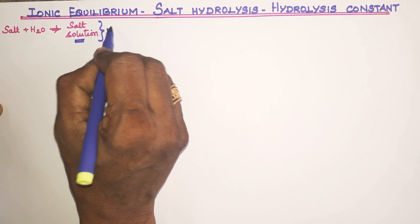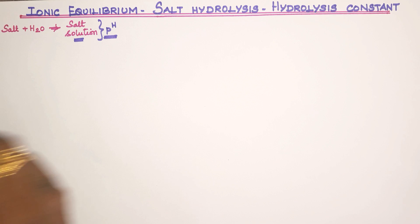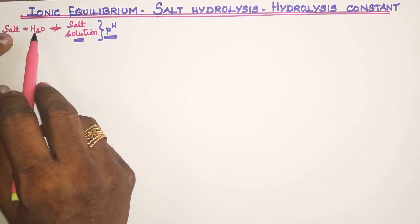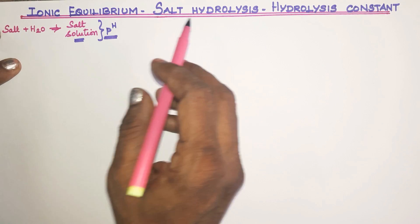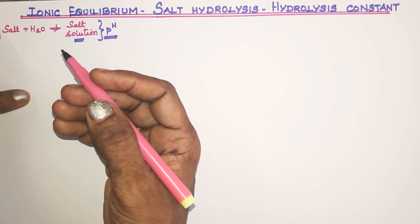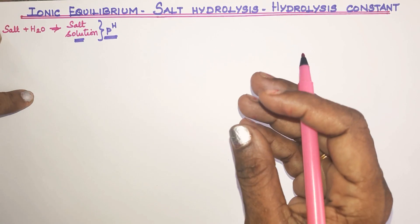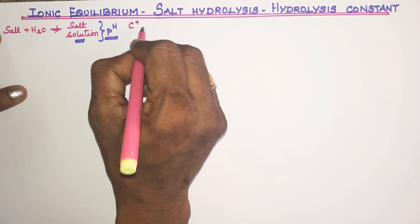A salt solution can be neutral. For example, Na⁺ Cl⁻ gives a pH of 7. The nature of whether a salt is neutral depends on what kind of salt it is.